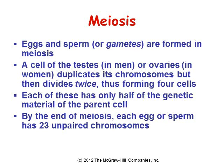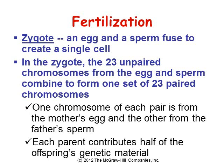Eggs and sperm are formed in a process called meiosis. A cell of the testes in men or ovaries in women duplicates its chromosomes but then divides twice, forming four cells, each with only half the genetic material of the parent cell. By the end of meiosis, each egg or sperm has 23 unpaired chromosomes. A zygote is formed when an egg and sperm fuse to create a single cell, combining the 23 unpaired chromosomes from each to form one set of 23 paired chromosomes. Each parent contributes half of the offspring's genetic material.